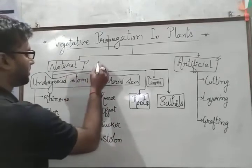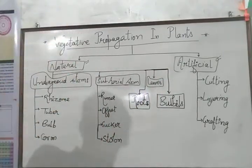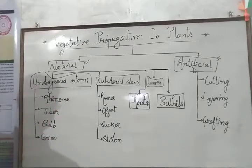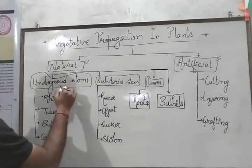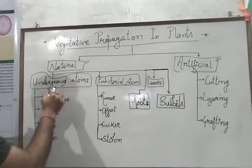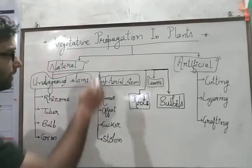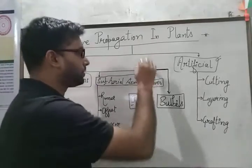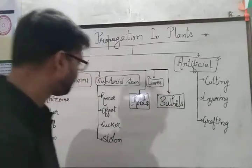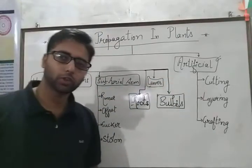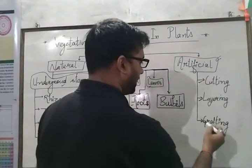These are broadly classified into natural and artificial. Natural type of vegetative reproduction is further divided into five subtypes: vegetative propagation by underground stem, vegetative reproduction by sub-aerial stem, vegetative reproduction by roots, vegetative reproduction by leaves, and vegetative reproduction by bulbils. Artificial is also subdivided into three forms: cutting, layering, and grafting.